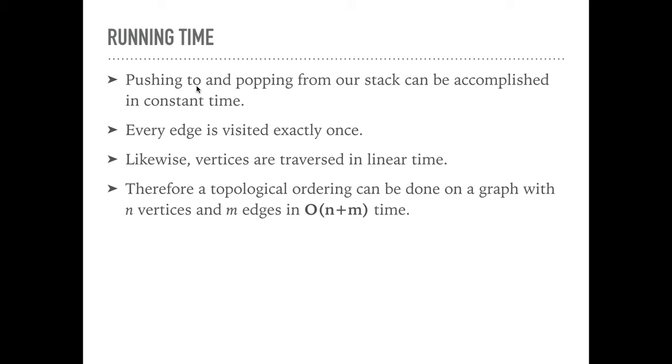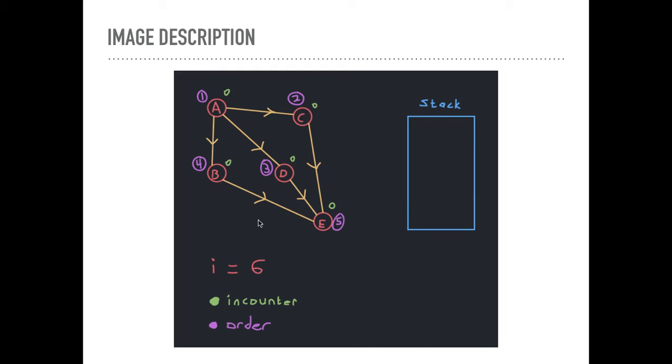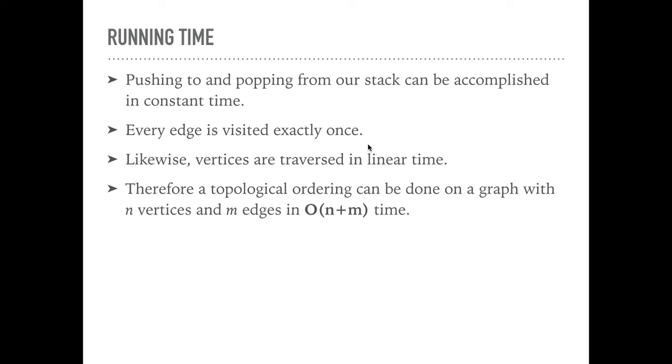Likewise, vertices are traversed in linear time. We're not looking at every vertex in the graph for A, and then going to C, and then looking at every vertex of that. It's not squared or anything. We're just looking at them in linear time. Sometimes we look at E from this, from this, and from this. But it's still linear time.